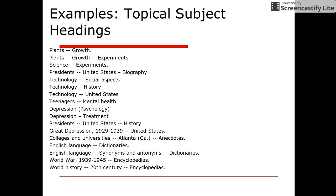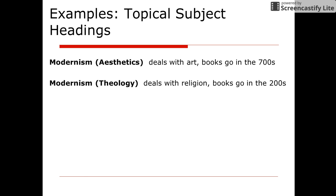These are some examples of topical subject headings, and you can see how they're written and what their subdivisions are. Another example of a topical subject heading would be using the topic of modernism. If it had to deal with aesthetics, it would deal with art, so those books would be in the 700s. If you talked about modernism as a form of theology, then that would be dealing with religion, so those books would go in the 200s.